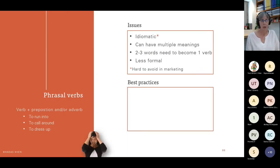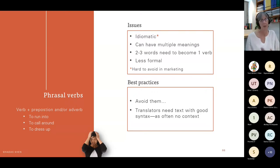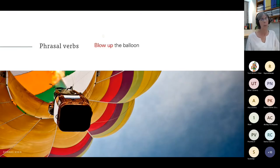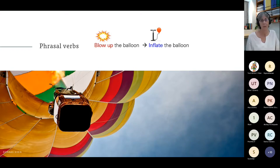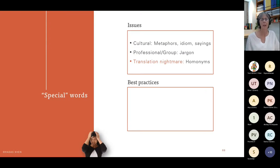Phrasal verbs are very idiomatic — they can have multiple meanings, several words may need to become one in the translation, and depending on your style they may be too informal. We want to avoid them. Translators need text with good syntax as there's often no context. For example, 'You blow up a balloon' can be perceived several ways — to actually inflate it or to explode it. If our meaning is to inflate, it's better to go with 'inflate.' And this takes us to special words: cultural terms like metaphors, idioms, and sayings, or professional jargon — or the translation nightmare of homonyms.